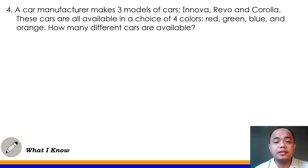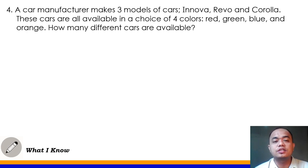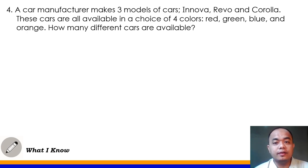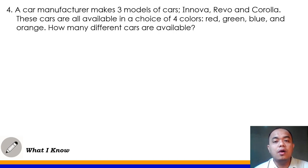Number four: a car manufacturer makes three models of cars — the Inova, the Revo, and Corolla. These cars are all available in a choice of four colors: red, green, blue, and orange. How many different cars are available? Ang gagawin natin, listing method naman para ma-solve yung number four. Meron tayong tatlong model ng car — Inova, Revo, and Corolla — in four different colors: red, green, blue, and orange. We will use listing method para makuha yung different cars na available.